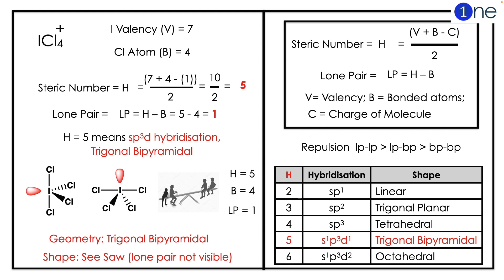The lone pair occupies the equatorial position. So if you look at the structure in the 3D way, you have a seesaw structure. ICl4+ structure is seesaw.